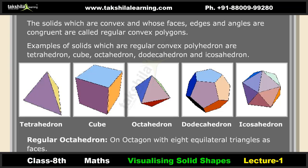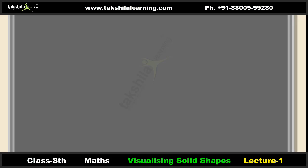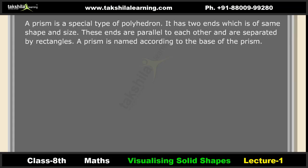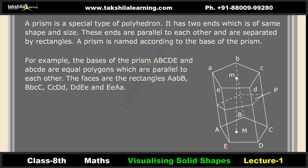A regular octahedron is an octahedron with eight equilateral triangles as faces. A prism is a special type of polyhedron. It has two ends of the same shape and size, which are parallel to each other and separated by rectangles. A prism is named according to its base. For example, the bases ABCDE are equal polygons parallel to each other, with rectangular faces AABB, BBCC, CCDD, DDEE and EEAA.